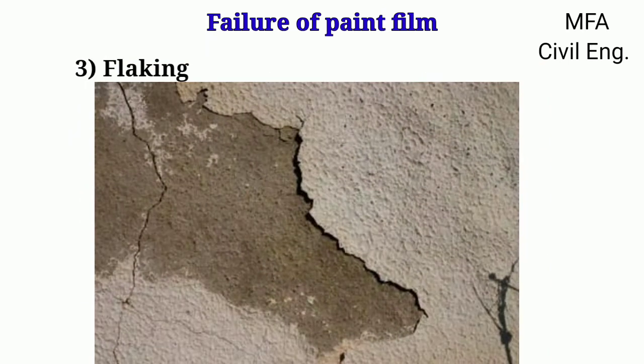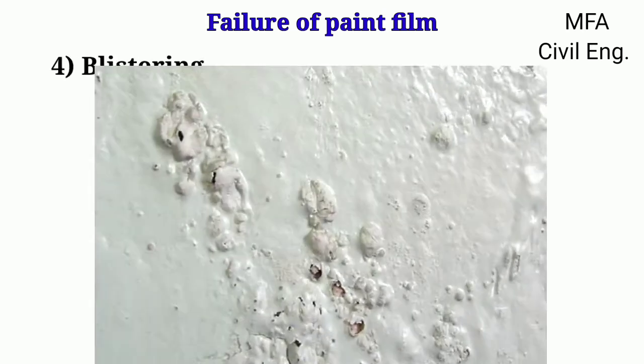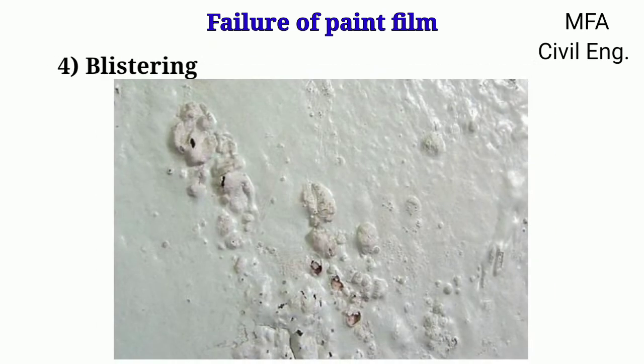Flaking is the peeling of a paint film from the painted surface. It is due to the presence of dust particles or greasy matter in the paint. This foreign matter results in poor adhesion of the paint to the painted surface, therefore causing peeling off.